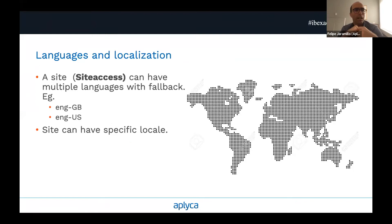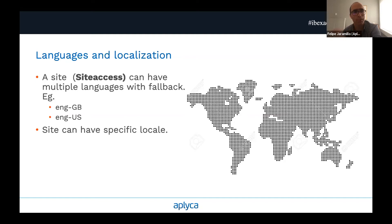Another key component is using languages and localization. The language engine is very powerful — you can have multiple languages in a single site. You define a main language and fallback languages. This allows content to be visible in different sites using the fallback language, say English US. If you have specific content for a particular country, you just translate from English US to English UK and put the UK-specific content there. This allows regional sites to reuse a lot of content while retaining options for custom content. Sites can also have a specific locale for currency, dates, and other elements.